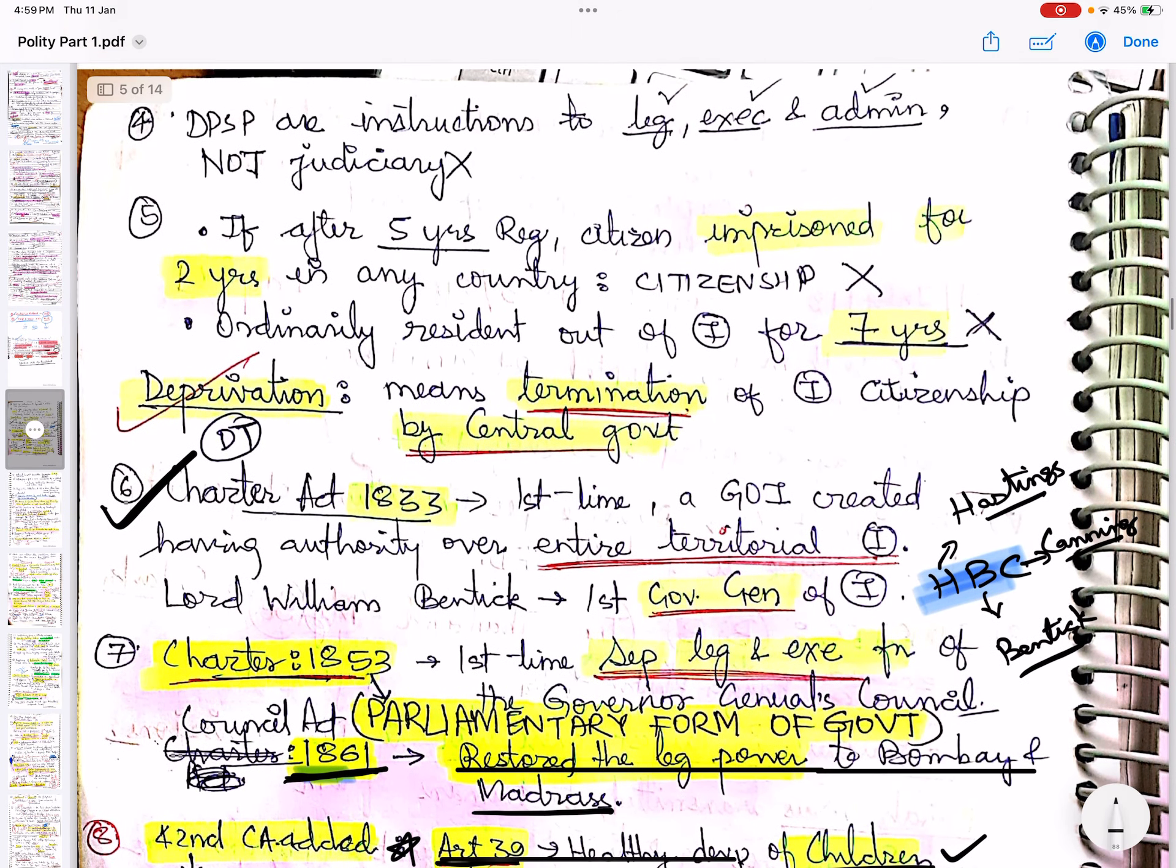DPSP - they are instructions to legislative, executive, and administrative, but not to judiciary. These instructions are not for judiciary.